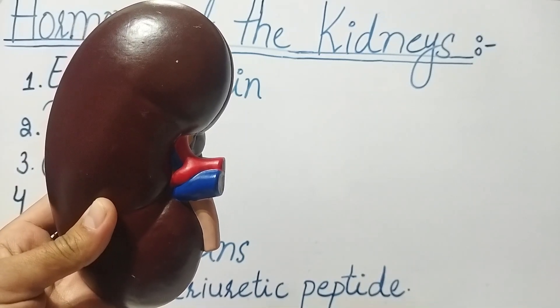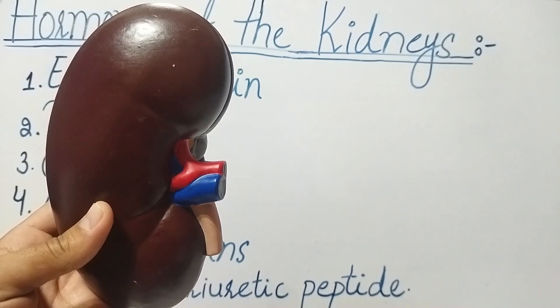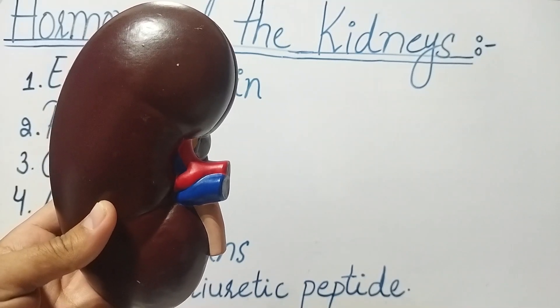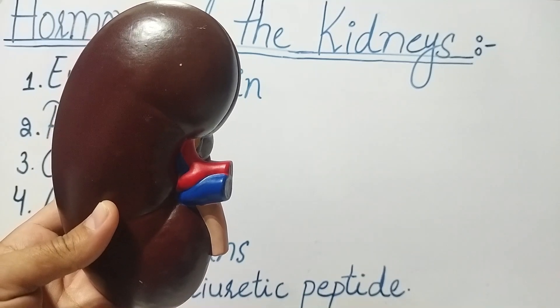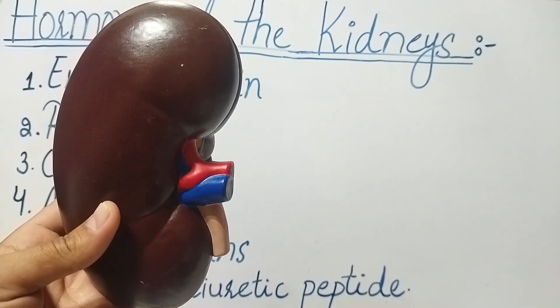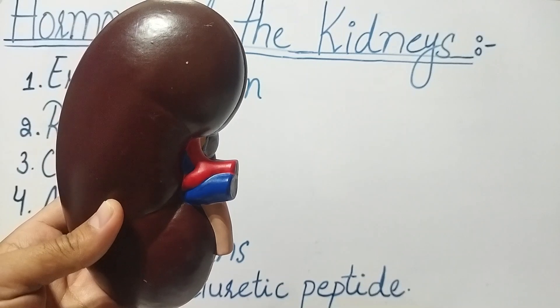Number third: calcitriol. Calcitriol is the active form of vitamin D, which is important for maintaining healthy bones and teeth. It is synthesized in the kidneys from a precursor found in the diet or produced in the skin through exposure to sunlight.